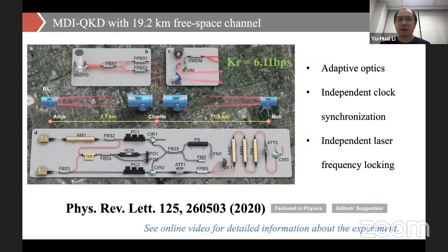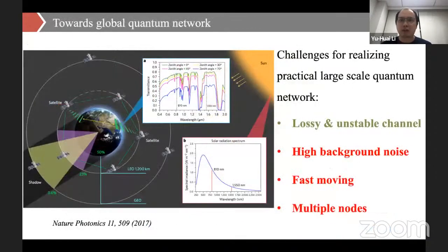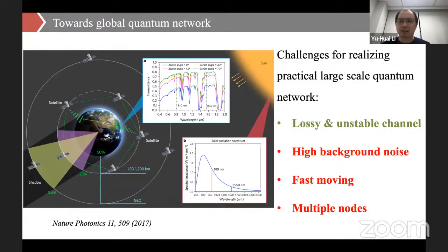Based on this, we performed an MDI-QKD experiment with nearly 20 kilometers of free space channel. This work has been published in PRL last year. After the first demonstration of long-distance free space MDI-QKD, we further focused on how to really build a practical global-scale network. The main challenges of satellite-based global application include: free space being a lossy and unstable channel, high background noise at daylight, fast moving satellites, and how to connect large numbers of nodes to build a network.